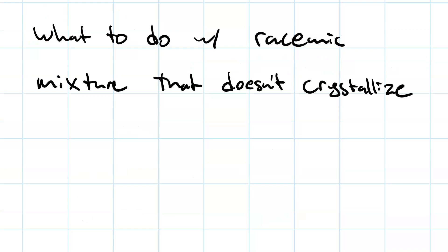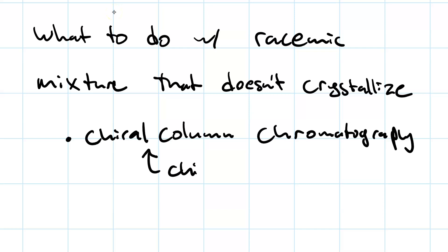So what do we do? Well, one thing we can do is chiral column chromatography. So you load your column with a chiral adsorbent material. That's one way to do it.